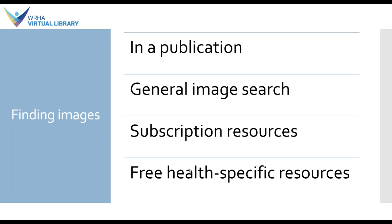Now let's talk a little bit about how to actually find images. I've developed four different general categories of locating images. The first is in the publication — keep in mind that the license of the publication may not be the same as the license of the image. We've got the general image search, our subscription resources available through the WHA Virtual Library, and finally a number of free health-specific resources that will help you find images in your area of practice.